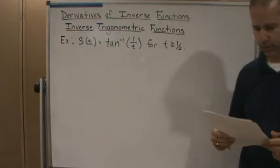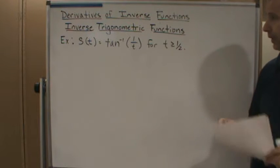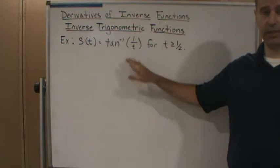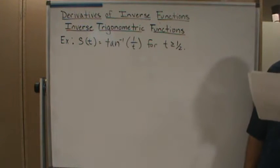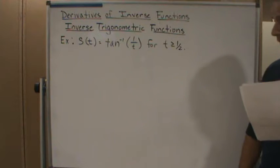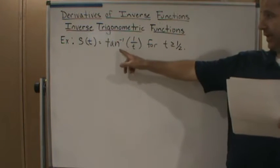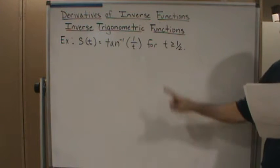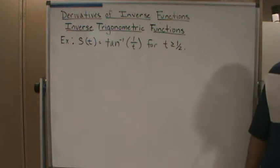Okay, welcome back. Let's do another example. This is an application example. The position of a particle at time t is given by the position function s(t) equals tangent inverse of 1 over t for t greater than or equal to 1/2. Find the velocity of the particle at t equals 1.